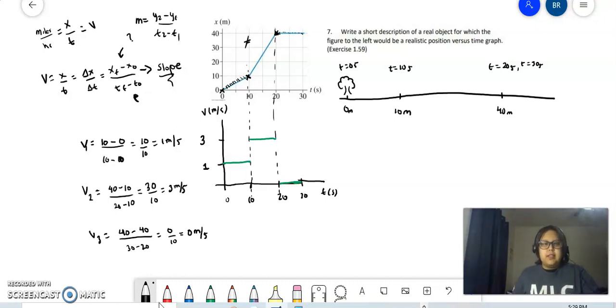So why did I do this? I did this because I want to know how my object is moving. I know it moved from 0 to 10 meters and 10 meters to 40 meters, but I don't know how it did. So now I know it did by moving at 1 meter per second from 0 to 10, and velocity equals 3 meters per second over here, and velocity is 0 here.